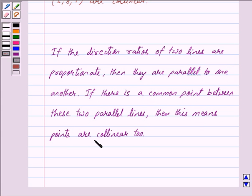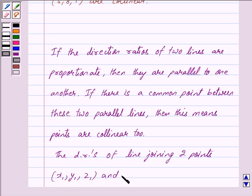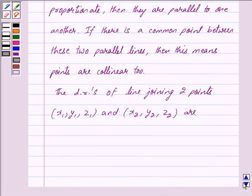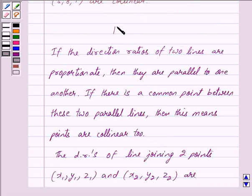Now the direction ratios of line joining two points (x₁, y₁, z₁) and (x₂, y₂, z₂) are (x₂ - x₁, y₂ - y₁, z₂ - z₁). So this is the key idea behind our question.